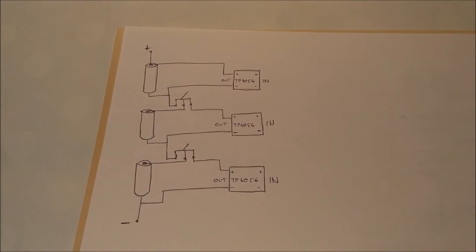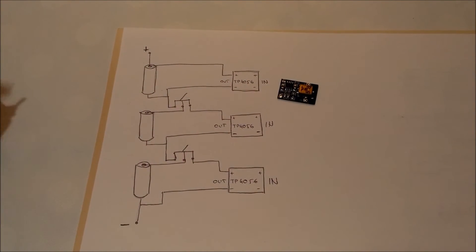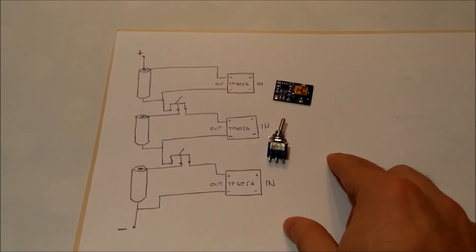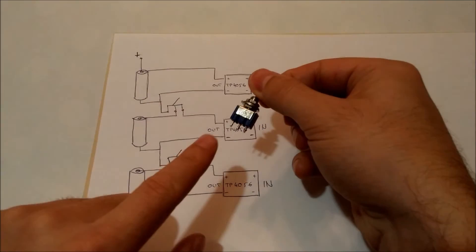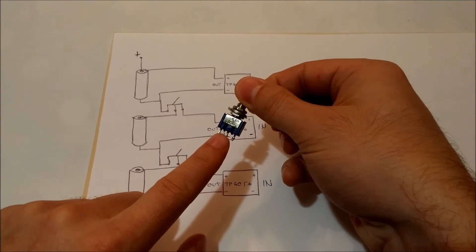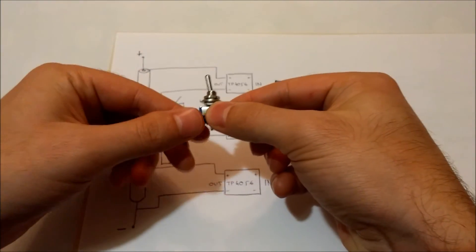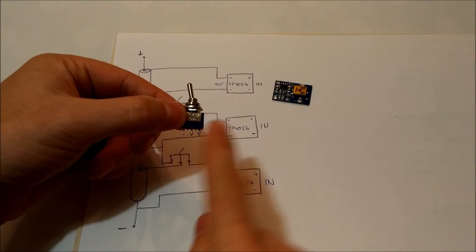Here we have a system of TP4056 with three batteries, and we are using a switch like this. This switch connects these two nodes when it goes right and these other two nodes when it goes left.